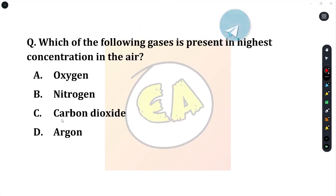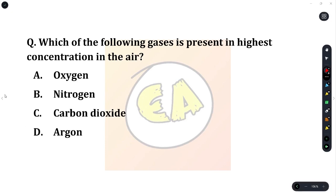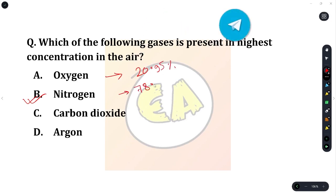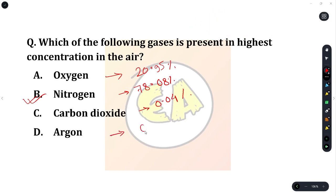Next question: which of the following gases is present in the highest concentration in the air? Option A: oxygen. Option B: nitrogen. Option C: carbon dioxide. Option D: argon. The correct answer is nitrogen. Argon is present at about 0.93%.